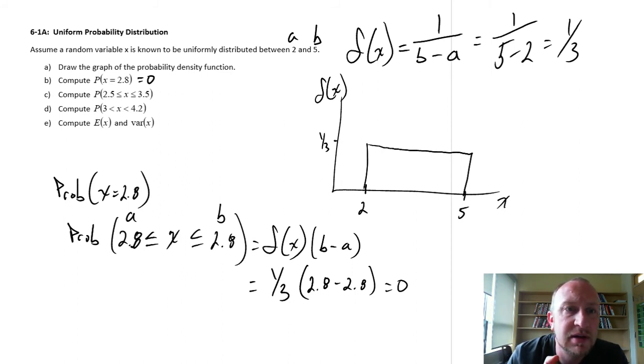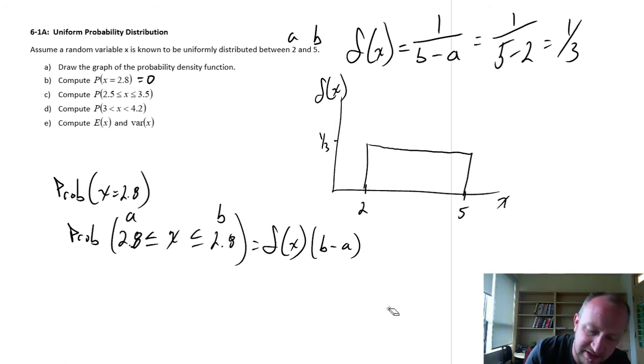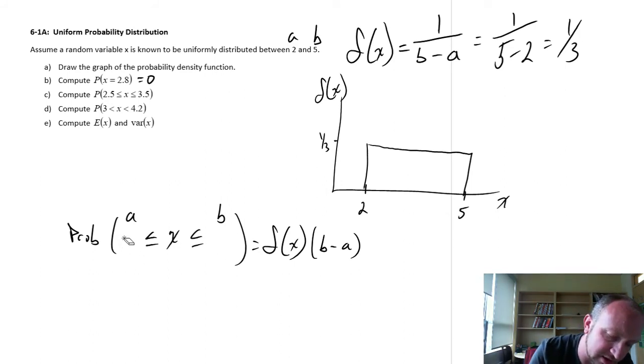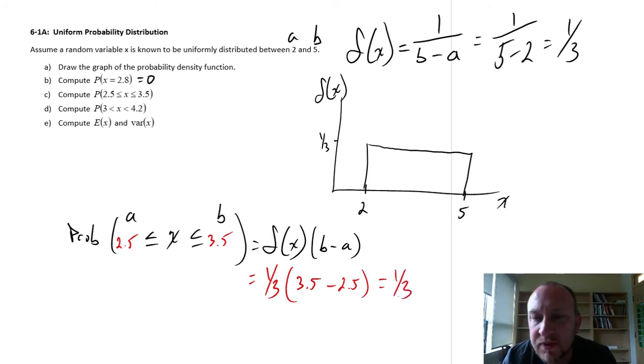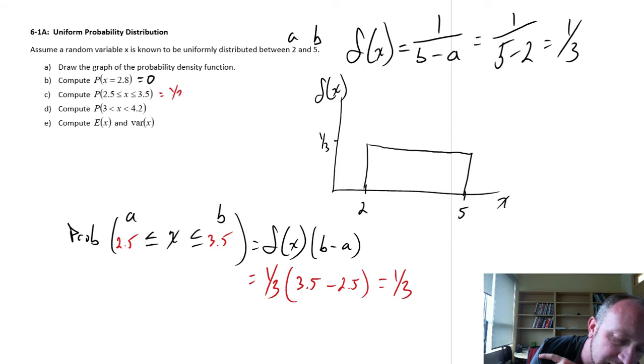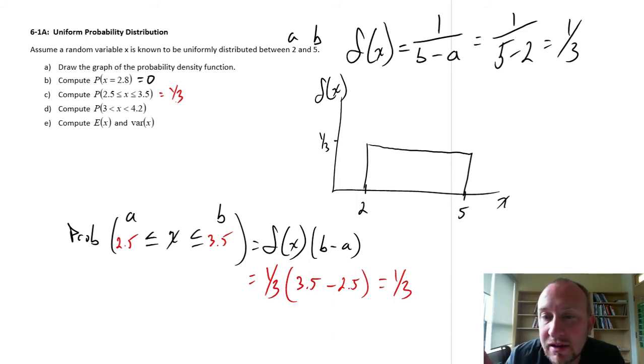Moving on, compute the probability that x is between 2.5 and 3.5. I can use the same calculation, except now let's change our values in here. Now we're looking at between 2.5 and 3.5. When we calculate our density function is 1/3, 3.5 minus 2.5, so that's 1/3 times 1. So there's our probability is equal to 1/3. There's a 0.33 probability, or a 33% chance that it takes on the value between 2.5 and 3.5.